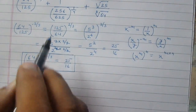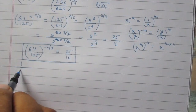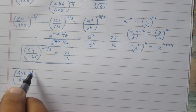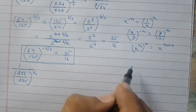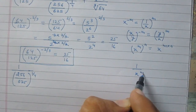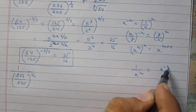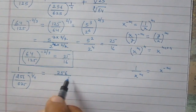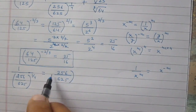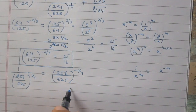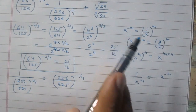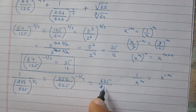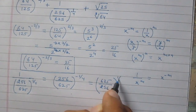Now consider 1 upon 256 divided by 625 raised to the power 1 by 4. We know that 1 upon x raised to the power m is equal to x raised to the power minus m. Using this rule, we can write it as 256 upon 625 raised to the power minus 1 by 4, and further using the negative exponent rule, we can write it as 625 divided by 256 raised to the power 1 by 4.